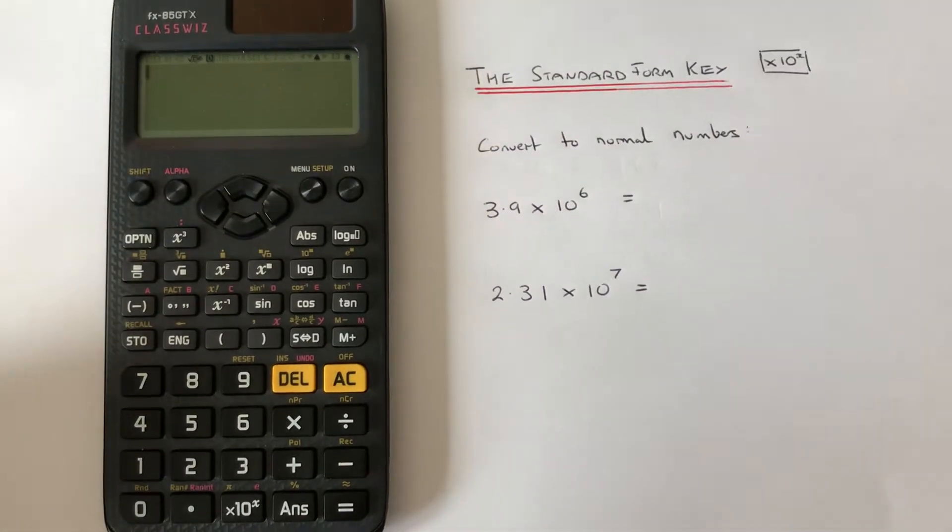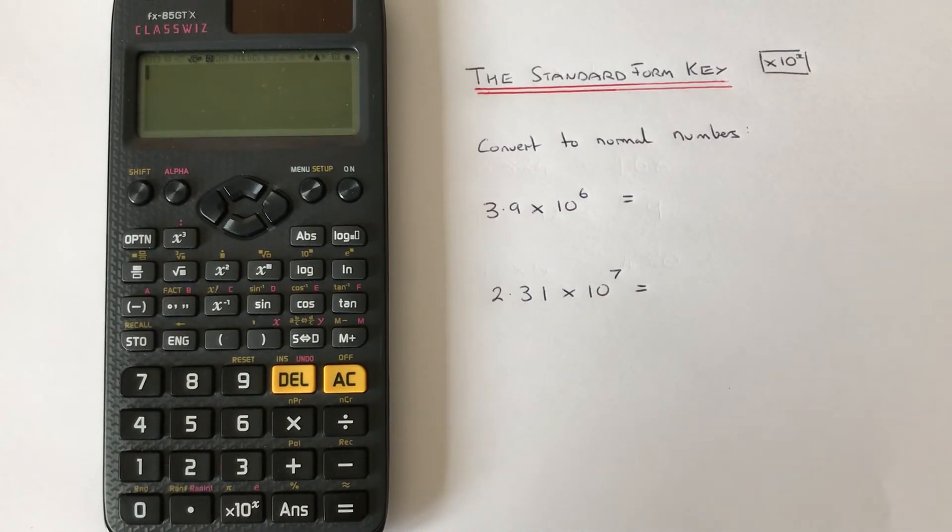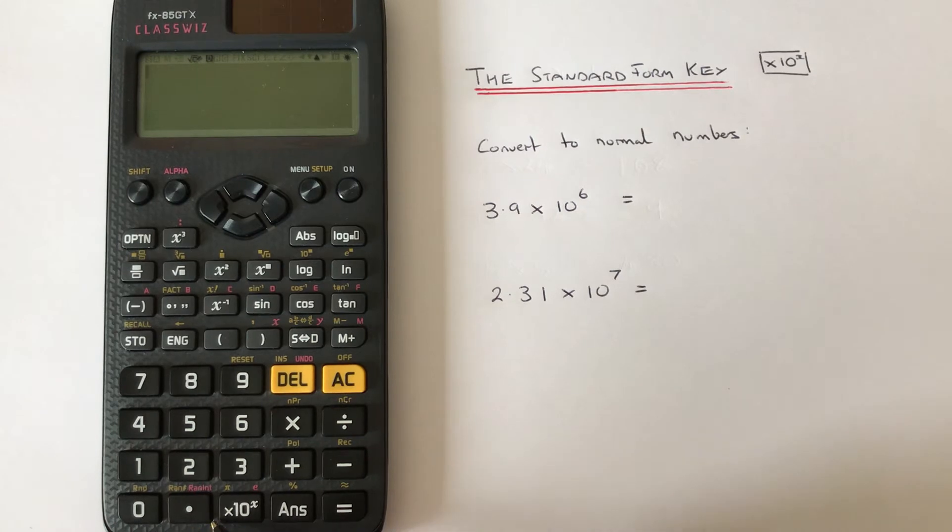Hi guys, welcome back, this is Maths 3000. I'm going to show you how to use the standard form key on a Casio Classwiz scientific calculator to convert a number in standard form into a normal number. The standard form key is located at the bottom of the calculator and it's the times 10 to the power of x key here.